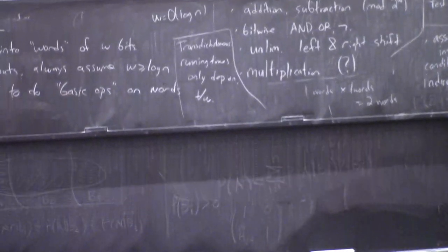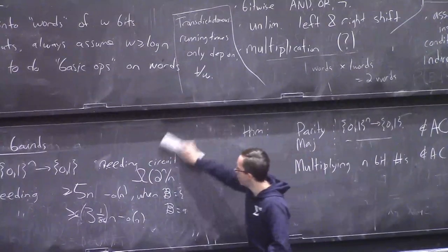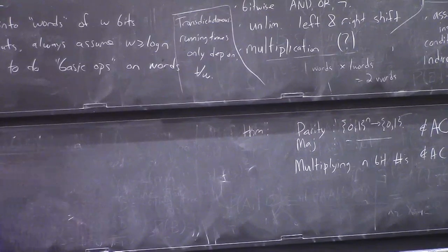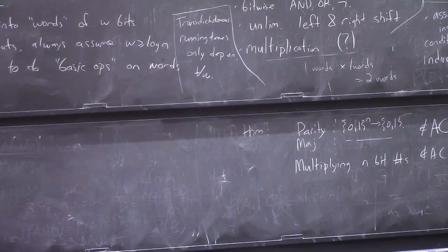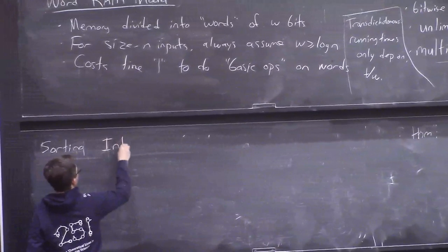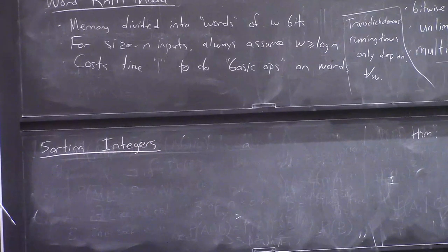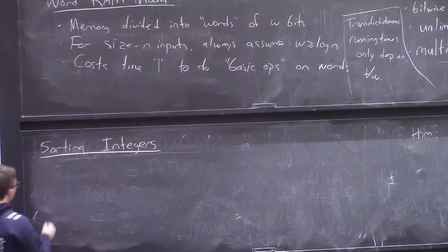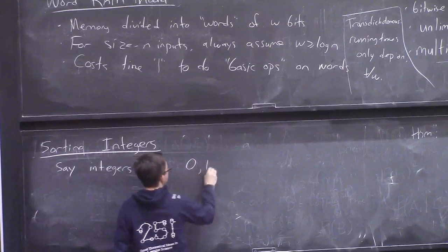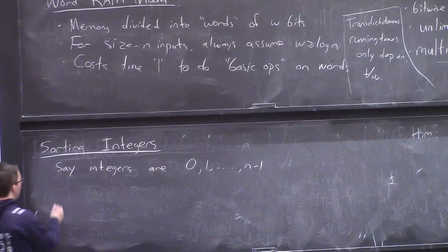So to kind of explore the interesting aspects of the word RAM model, I want to come back to the more sophisticated problem we talked about at the beginning, which is sorting. And what's actually kind of amazing is at the end of the day, if you're really into all the fine-grained aspects of algorithmic theory, the best running time for sorting is an unknown research problem. So we'll get to that. So let's talk about the task of sorting integers.